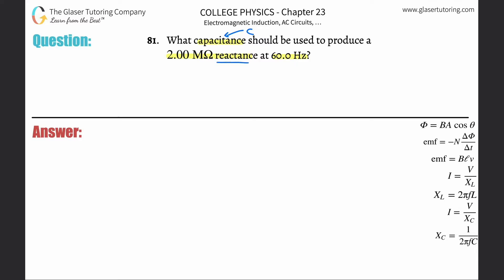Then they're telling you the reactance of this capacitance. In other words, they're telling you the capacitive reactance. So reactance has the variable letter X. And since we're talking about capacitive reactance, it's going to be X sub C.